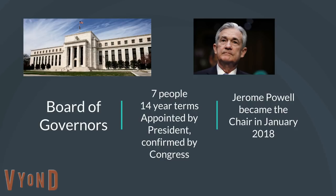They're appointed by the president and confirmed by Congress, but because they serve 14-year terms, they're very independent — or can be. The Republicans, two years before the end of Obama's second term, stopped appointing people to the Federal Reserve. In 2018, we actually got down to the point where there were only two people on the Federal Reserve Board of Governors, where there are supposed to be seven, and they were both Obama appointees.